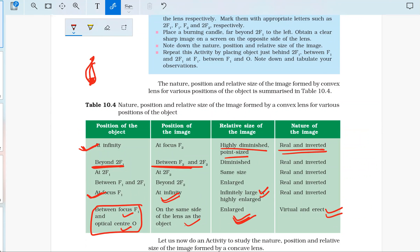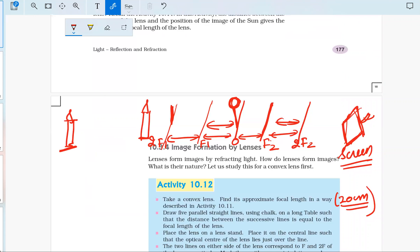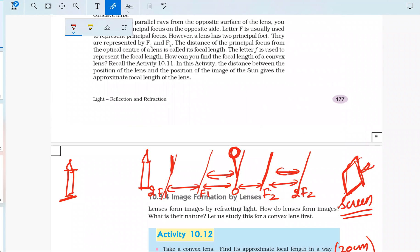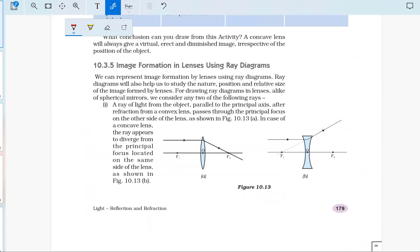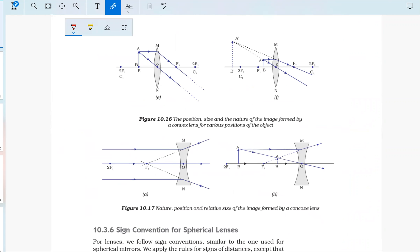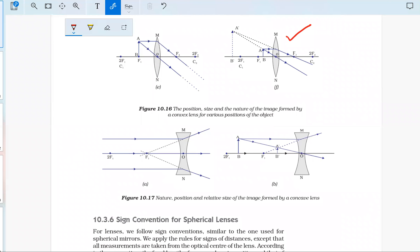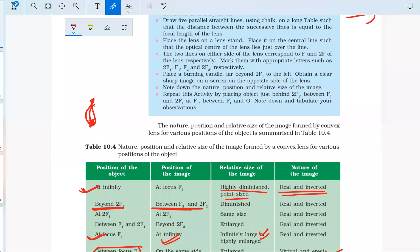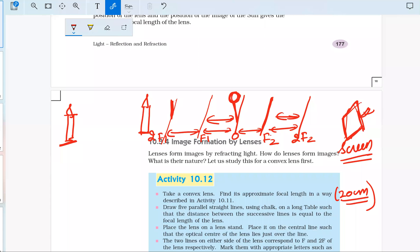The image formed will be enlarged, and it will be on the same side of the lens as the object. We have already seen this ray diagram. This always forms a special case because it is different from the other five cases. This last case: virtual, erect, and the image is enlarged and obtained on the same side of the lens. So this is Activity 10.12.